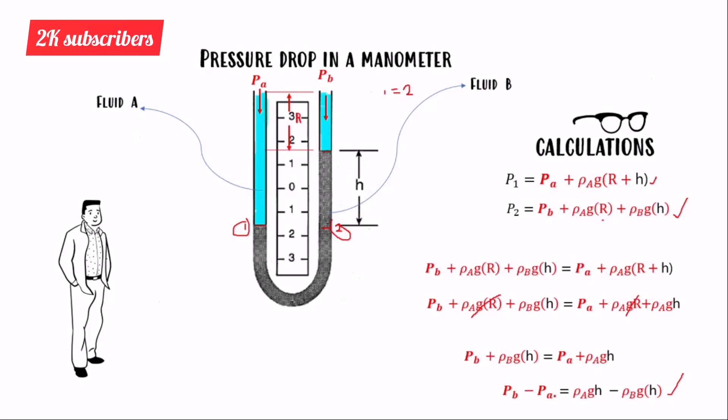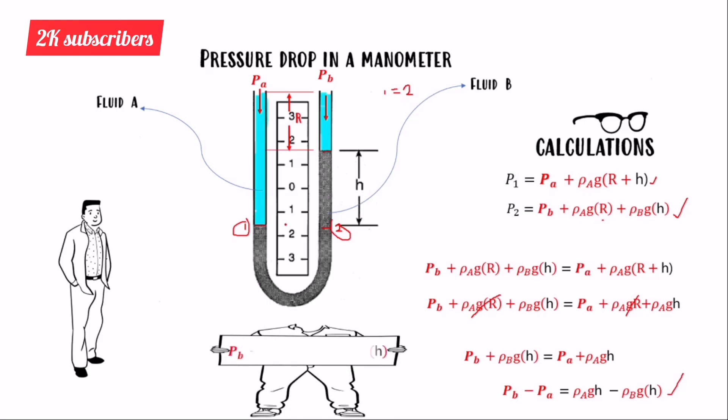When given a question, analyze the diagram, identify points at the same level, and apply this approach. There will always be a level where pressures are equal, and that is the key to solving manometer pressure drop problems. Thank you for watching, and I hope you subscribe.